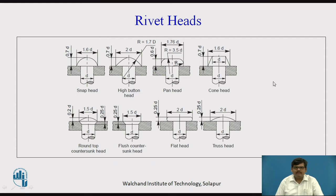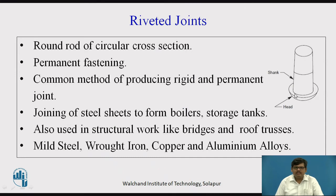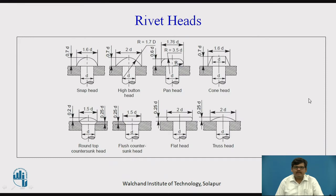Moving further, we have riveted heads. Based on the shape of the head we have different types of rivets. The first one is snap head, which is in a circular fashion. Then we have high button head. Then we have pan head, which is slightly flat at the top. Then we have cone head, which is in the shape of a frustum of a cone.